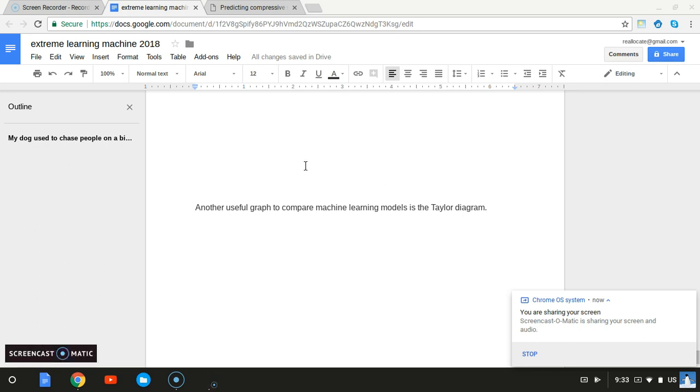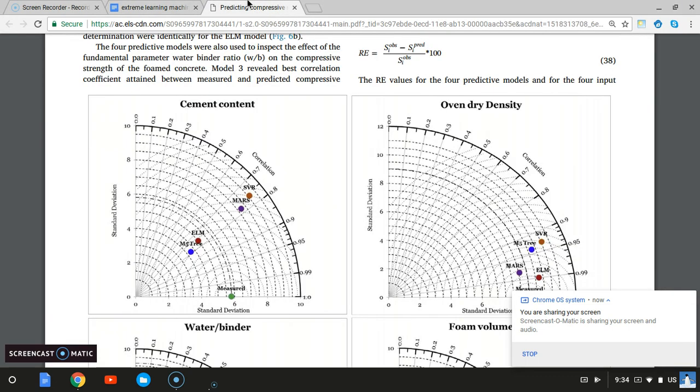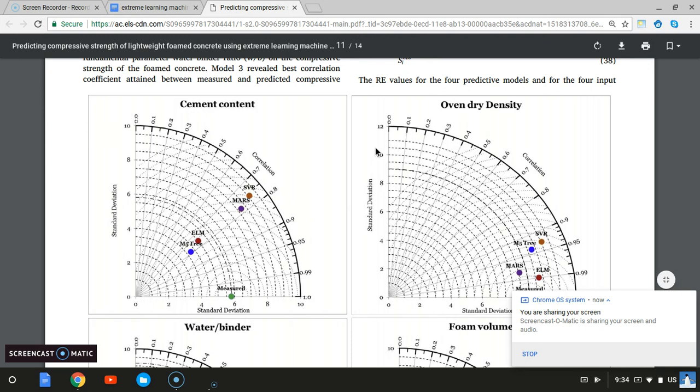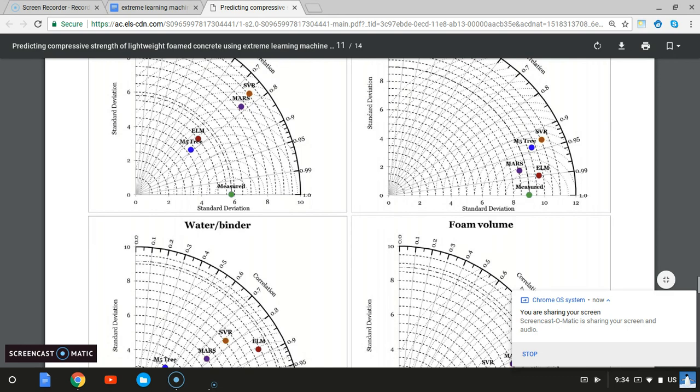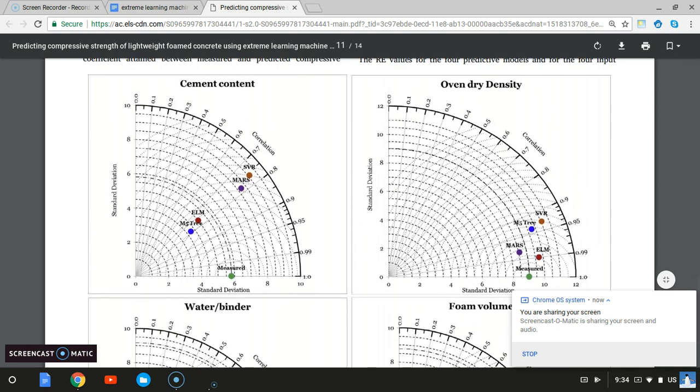Another useful graph to compare machine learning models is the Taylor diagram. In this paper, the authors published four different Taylor diagrams for different input variables.